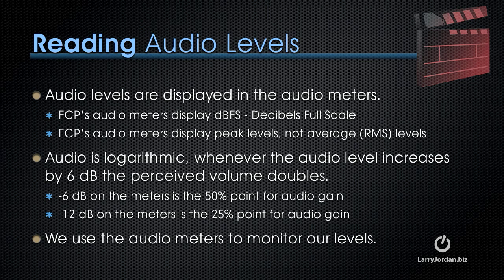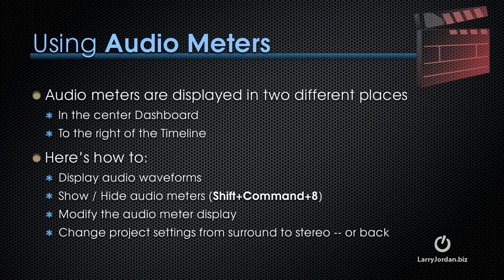We use the audio meters to monitor our levels. Audio meters are displayed in two different places: in the center dashboard and to the right of the timeline within Final Cut Pro 10. Let me illustrate how to display audio waveforms, how to show or hide the audio meters — the keyboard shortcut is Shift-Command-8 — how to modify the audio meter display, and how to change project settings from surround to stereo or back.